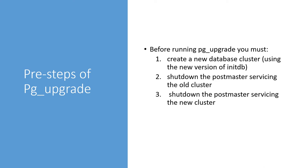So how do we use the pg_upgrade utility? Before running this utility you have to create a new cluster and instantiate it using initDB. In our demo we are upgrading from PostgreSQL 10 to 12, so there will be one instance of PostgreSQL 10 and another of PostgreSQL 12. You have to shut down both the older and the new instance before using this upgrade utility.